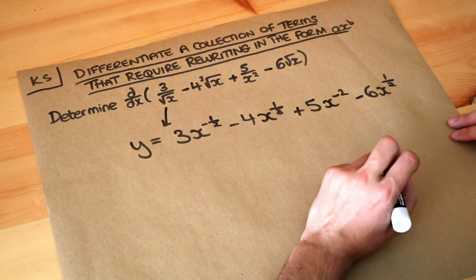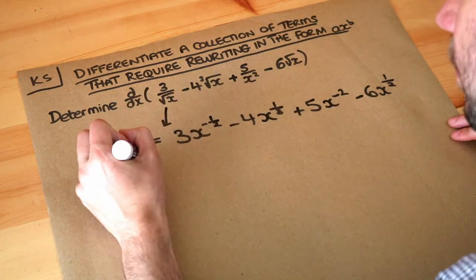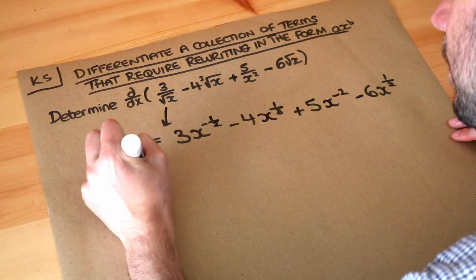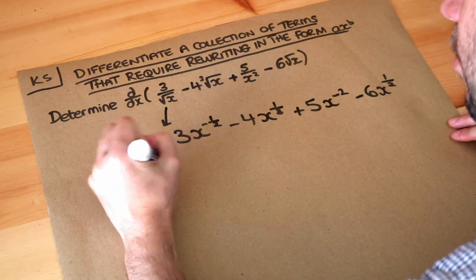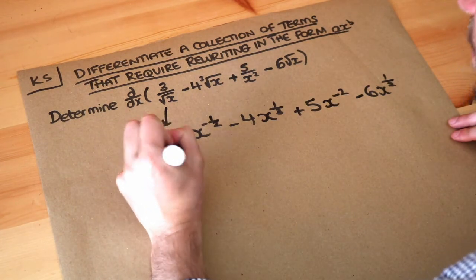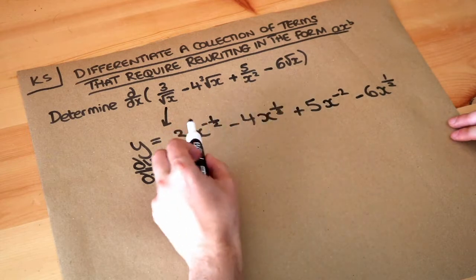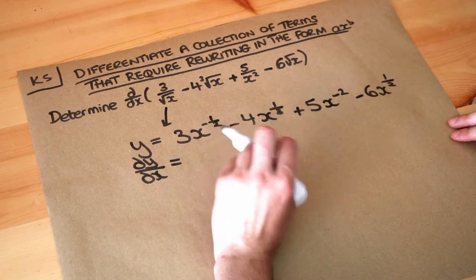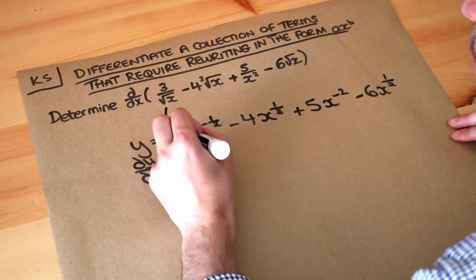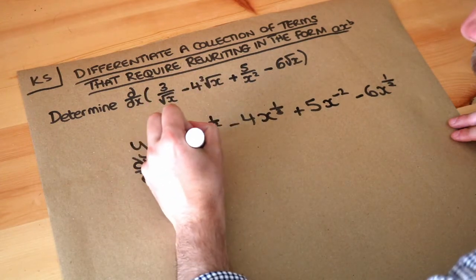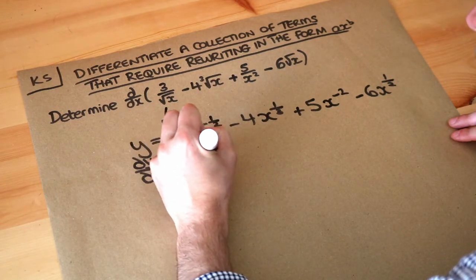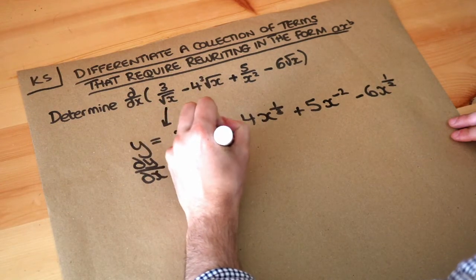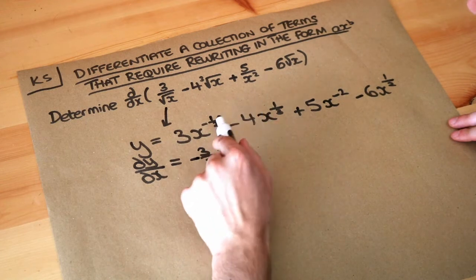So now we can actually do the differentiation. We find dy/dx — that means the gradient function — and we do the usual thing: multiply the coefficient of each term by the index of X, then reduce the index by 1. So for the first term, 3 times minus half gives minus 3 halves, X to the power of...